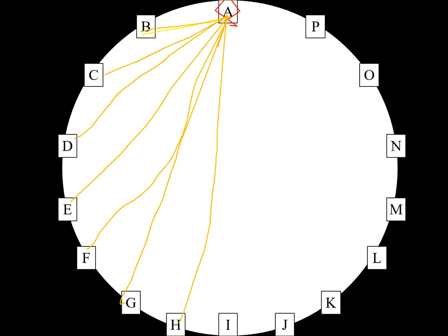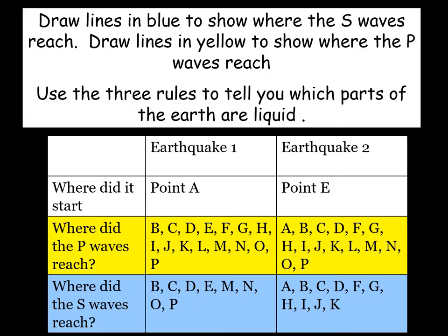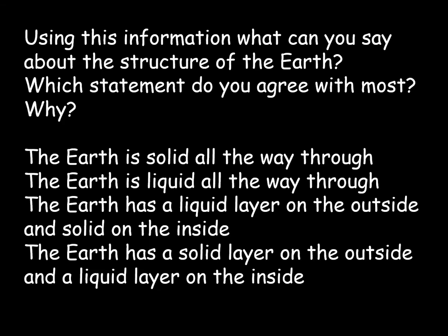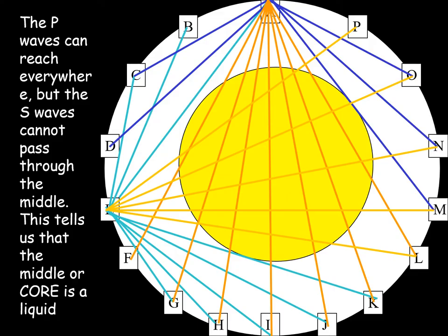Whereas an S wave can't reach all of those locations. This tells us something: if S waves can reach point E but not point F, there must be something in the middle. Our second piece of data is that P waves travelling through the middle of the Earth travel faster. Here's the data I made up: earthquake 1 started at point A and was detected at various places as P waves and S waves. Is the Earth solid, liquid all the way through, liquid outside with solid inside, or solid outside with liquid inside?